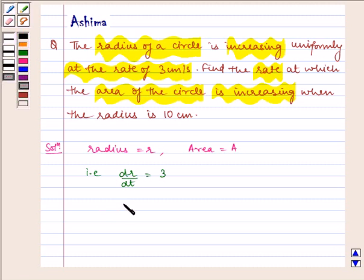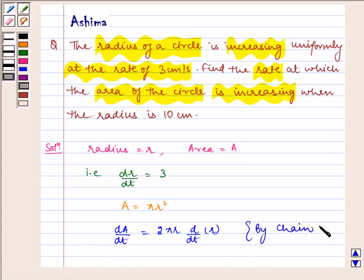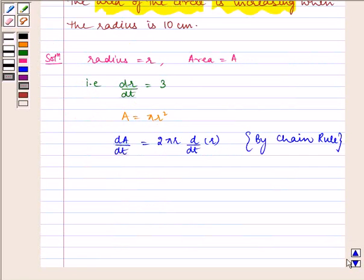So, area of the circle is given by pi R square. Now, differentiating it with respect to t, we get dA by dt is equal to 2 pi R times d by dt of R by chain rule. This implies dA by dt is equal to 2 pi R dR by dt.